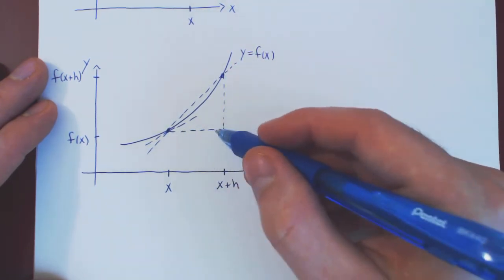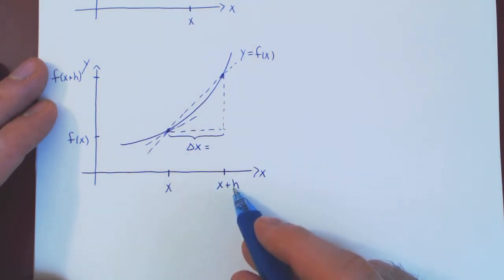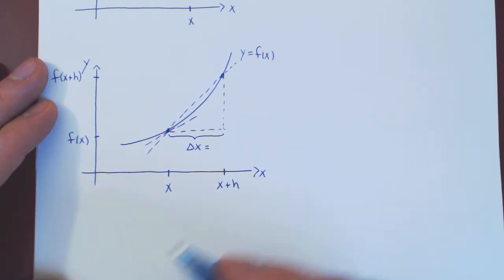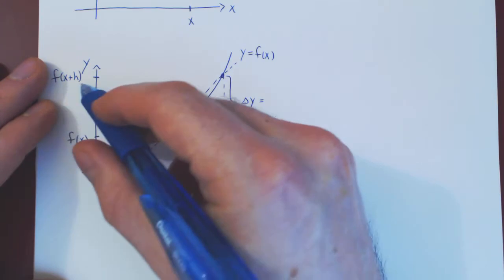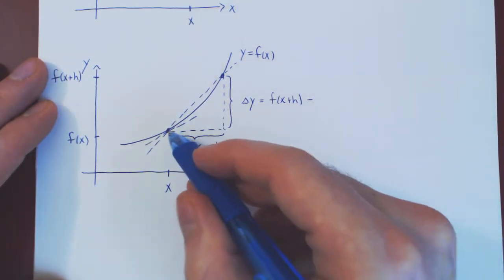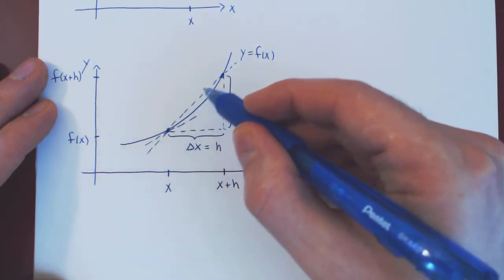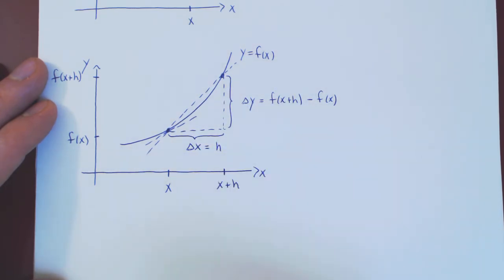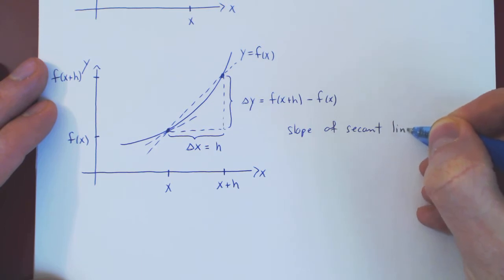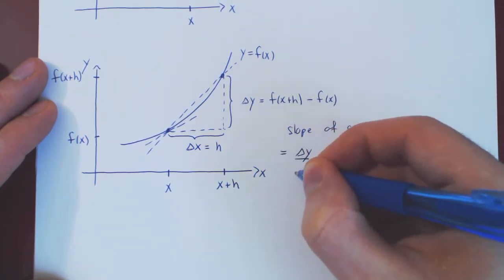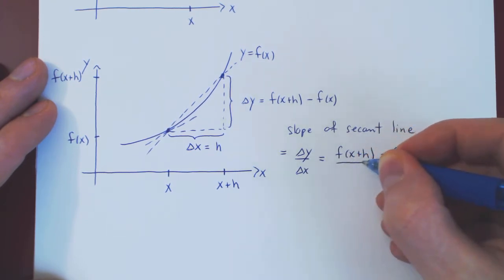The slope is always the change in y over the change in x. The change in x of the secant line, delta x, is the larger x value, x plus h, minus the smaller x value, x — so x plus h minus x is simply h. The change in y, delta y, is the larger y value, f of x plus h, minus the smaller y value, f of x. Finding the slope of the secant line is trivial. It is simply delta y over delta x, which is f of x plus h, minus f of x, all over h.